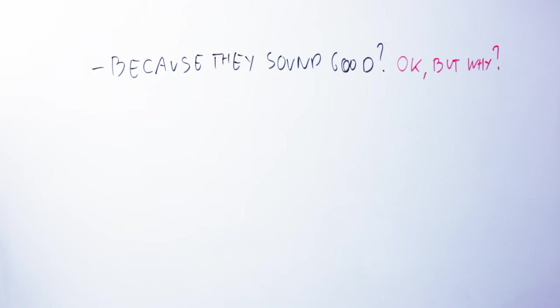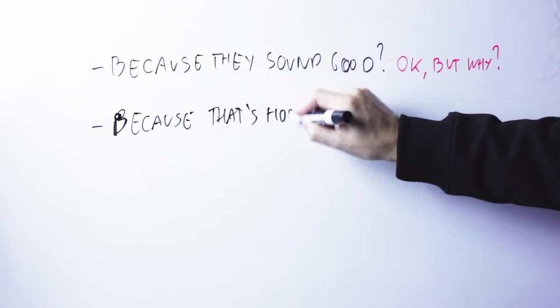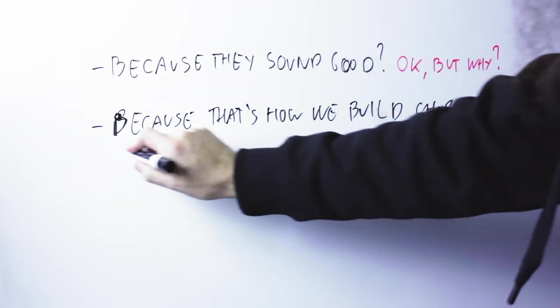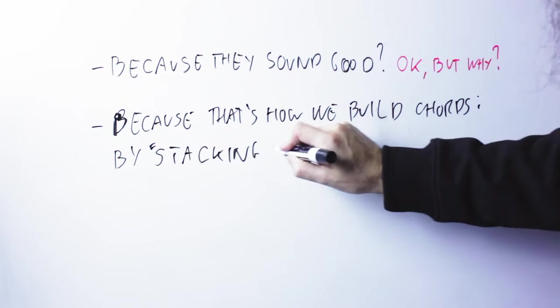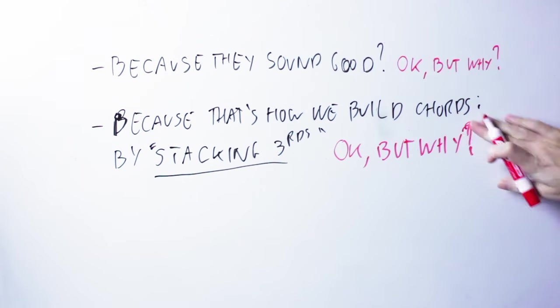Some other people are gonna say, yeah, you know, that's how we build chords. We take a note, then we take every other note in the scale, or we go up by thirds in the scale, whatever, and then we pick the first three notes. That's great, fantastic, but it still doesn't tell me why.